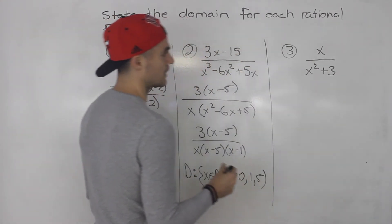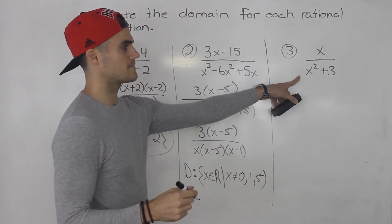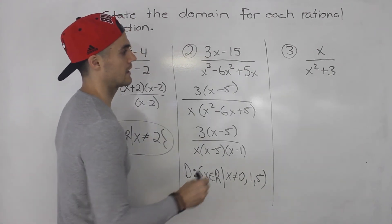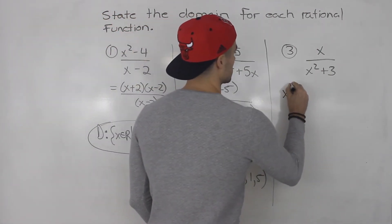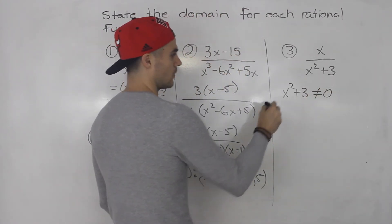And then number 3, we've got x over x²+3. Now x²+3, can we factor that? We can't factor that. And notice that x²+3, when is it not going to equal 0?